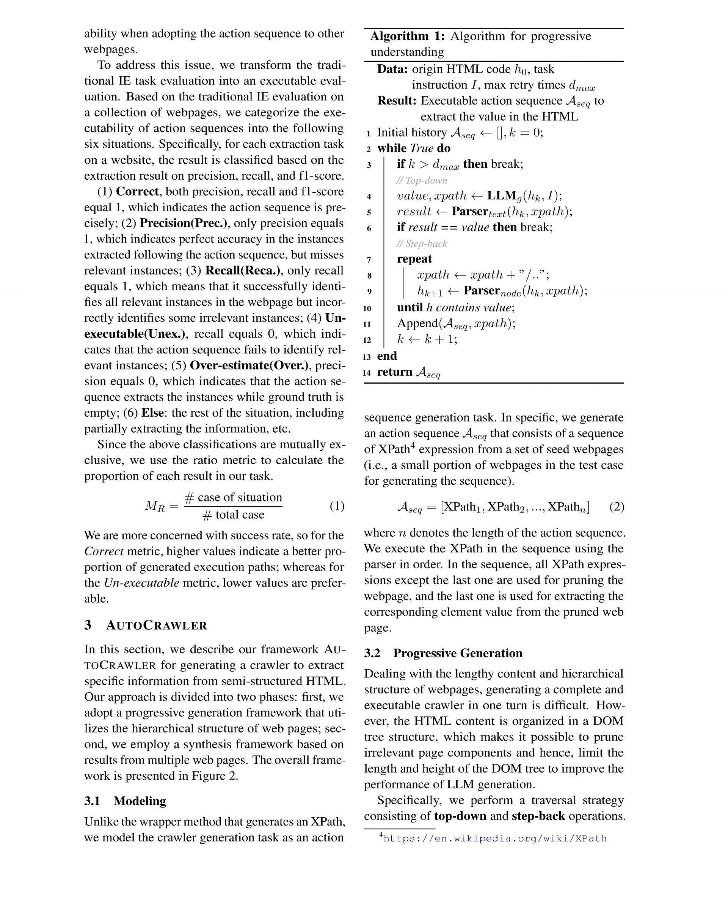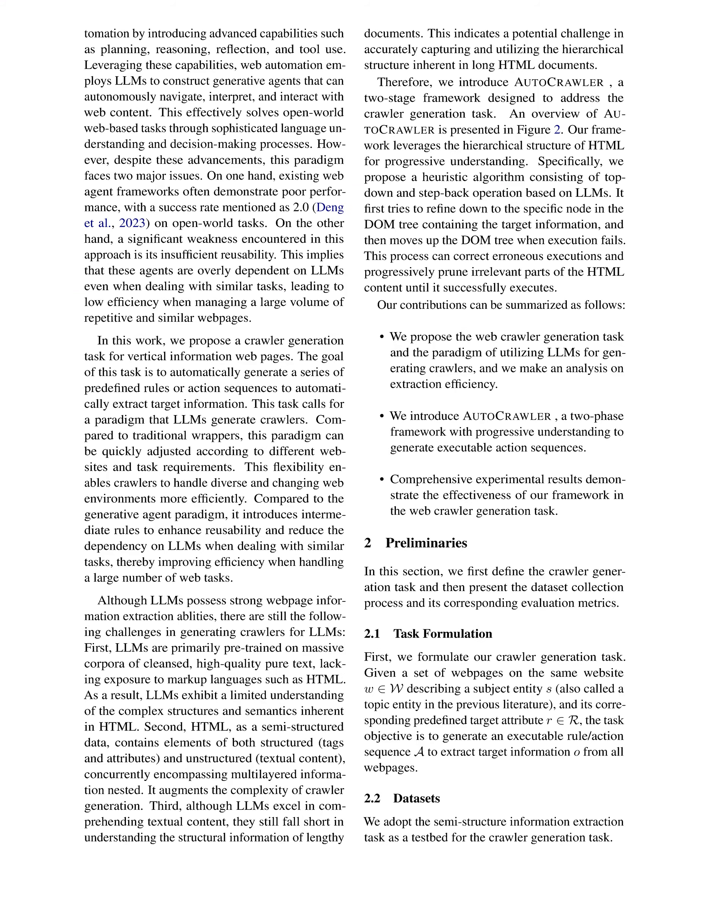The top-down operation starts from the root node and progressively narrows down to the node with the target information. If execution fails, the step-back operation reassesses by moving up the DOM tree to choose a more reliable node for accurate XPath targeting.